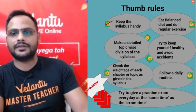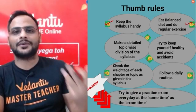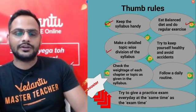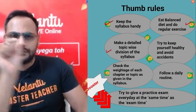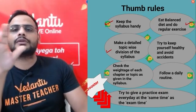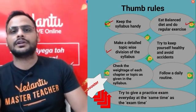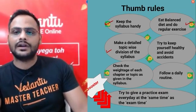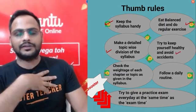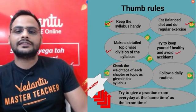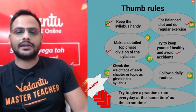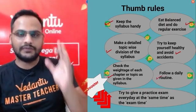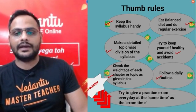Some thumb rules you should definitely follow: keep the syllabus handy, take care of your health, make a detailed topic-wise division of the syllabus so you know all the subtopics and formulas — for example, the quadratic formula x = (−b ± √(b²−4ac)) / 2a. Keep small notes, avoid accidents, check the weightage of each chapter, and follow a consistent daily routine.